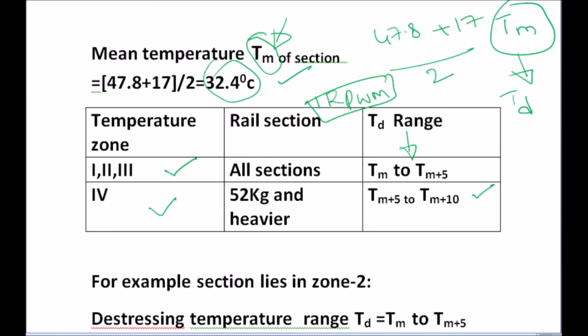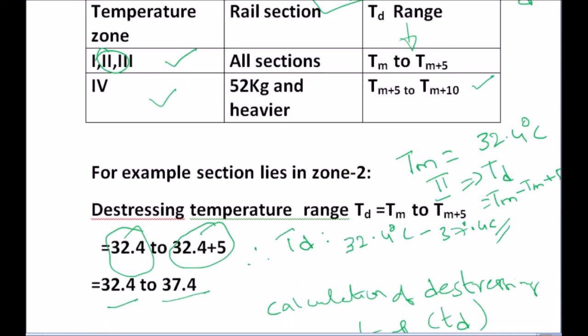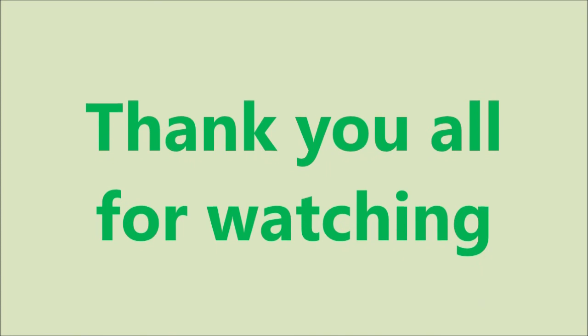From the above data, TM equals 32.4°C. For Zone 2, TD is in the range of TM to TM + 5, which means 32.4°C to 37.4°C. Therefore, the distressing temperature range for Zone 2 is 32.4°C to 37.4°C. That is how we calculate the distressing temperature. This is very important, as there are many applications of this distressing temperature — for example, if you want to introduce hot weather patrolling.